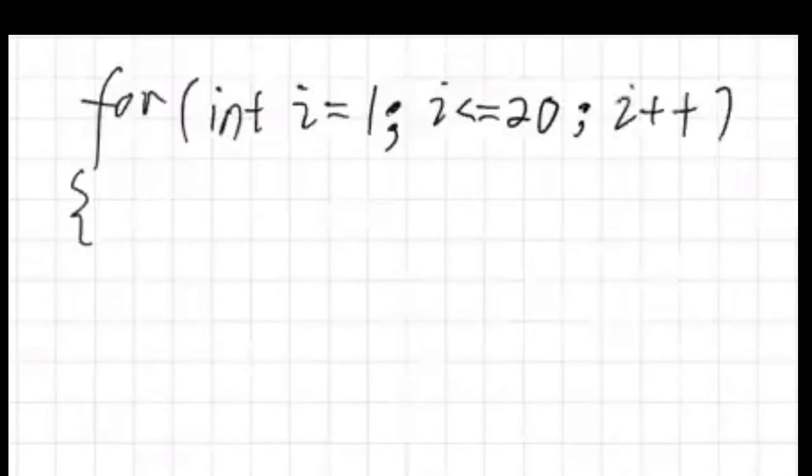And then we're going to use curly braces to show where the for loop is and the scope, so inside of the two curly braces we can do something.